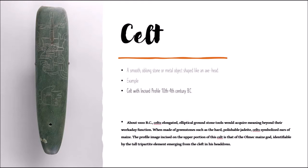Our first vocabulary word for Arts of the Americas is Celt. It might be confusing because you hear the word Celtic with the Irish in some of our early arts, but here for the Mayan culture, we have a Celt. A Celt is a smooth oblong stone or metal object shaped like an axe head. Our example was created between the 10th and the 4th century BCE and has an incised profile, coming from about 1000 BCE. Celts are elongated elliptical ground stone tools that would acquire meaning beyond their everyday work function, so there was a didactic purpose behind this.